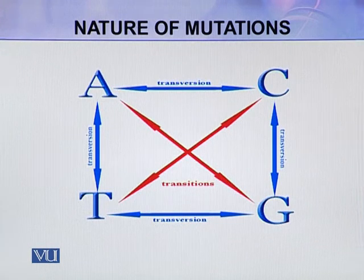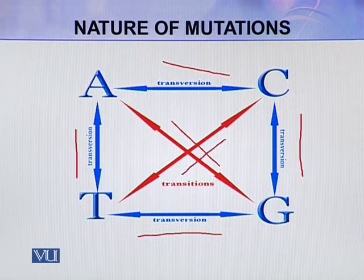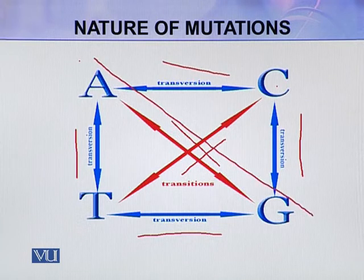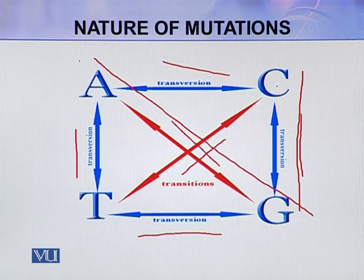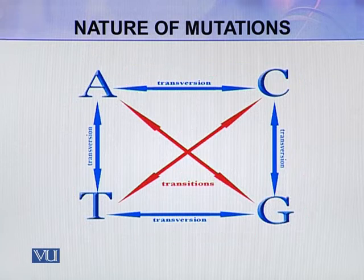In this picture, all the blue lines are transversions and all the red lines are transitions. So if T is substituted for C, this is a transition. If A is substituted for G, this is a transition. If C is substituted for G, this is a transversion. If G is substituted for T, this is also a transversion. Similarly, if A is substituted for C, this is also a transversion.